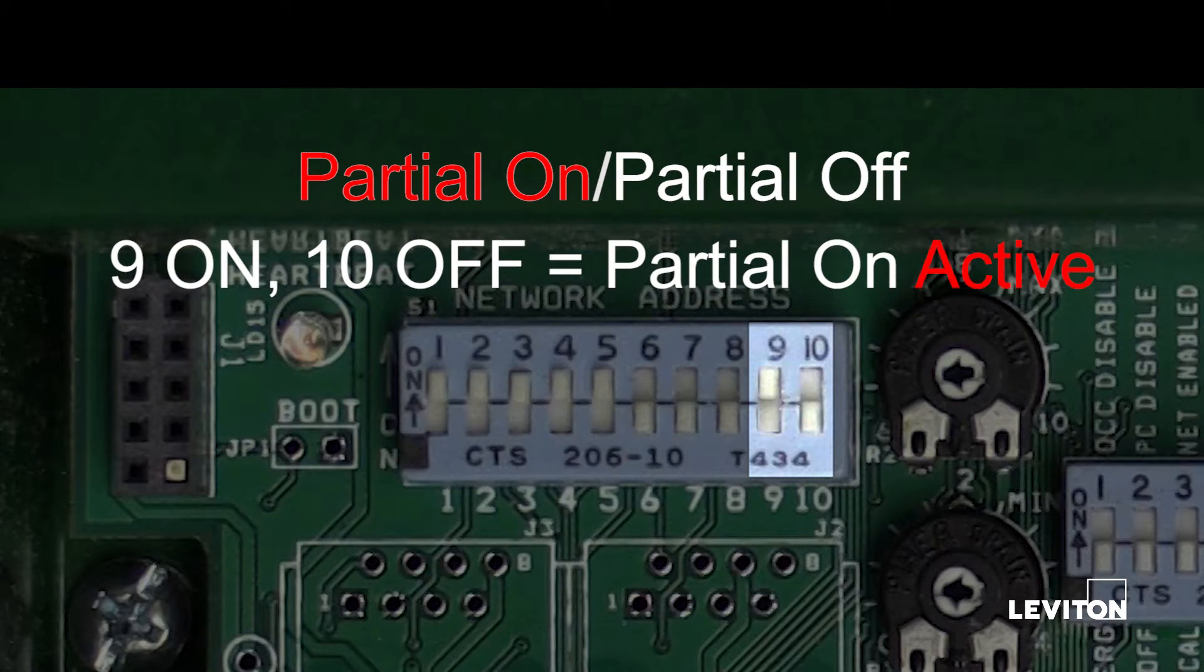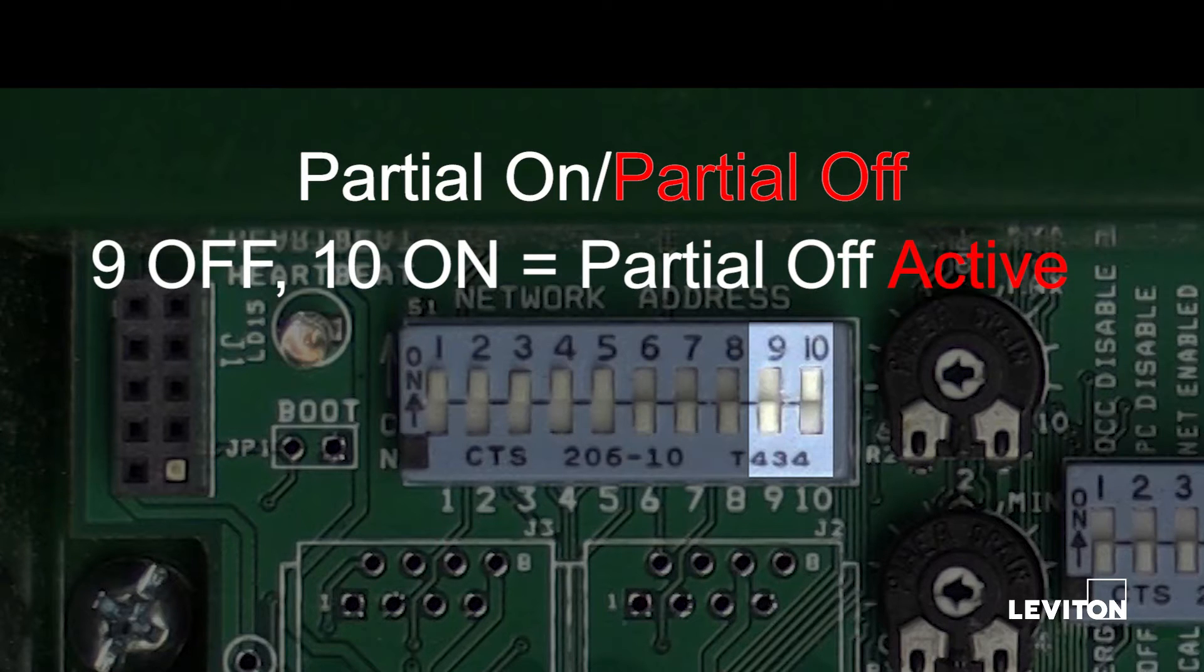If Dipswitch 9 is in the on position and Dipswitch 10 is in the off position, partial on is active. If Dipswitch 9 is in the off position and 10 is in the on position, partial off is active.